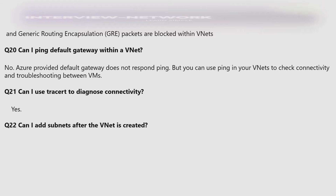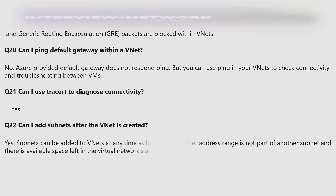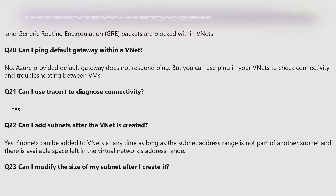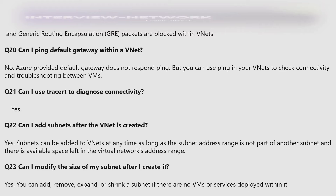Can I add a subnet after the VNet is created? Yes — subnets can be added to VNets at any time as long as the subnet address range is not part of another subnet and there is available space left in the virtual network's address range. Can I modify the size of my subnet after I create it? Yes — you can add, remove, expand, or shrink a subnet if there are no VMs or services deployed within it.